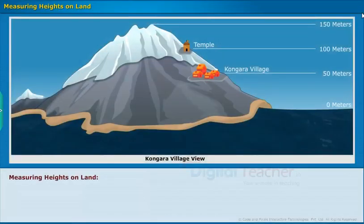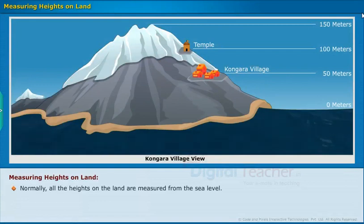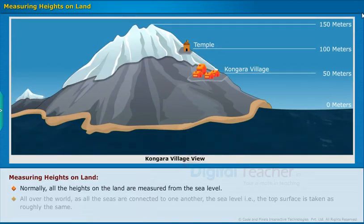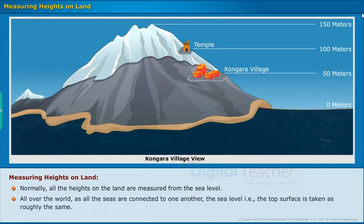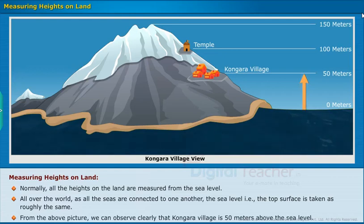Now let us learn about measuring heights of land. All heights on the land are measured from the sea level. Since all seas are connected to one another, the sea level — that is, the top surface — is taken as roughly the same across the world. From the picture shown, we can observe that Kongara village is 50 meters above the sea level.